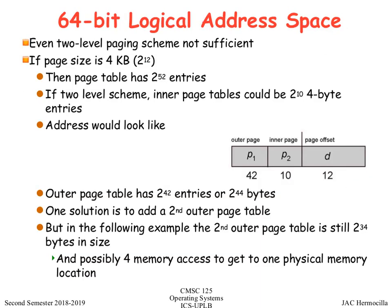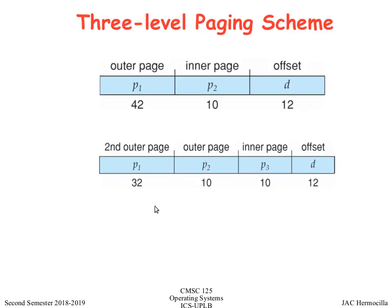For a 32-bit architecture, two levels of paging is okay. But for 64-bit, two levels are not enough, so it can be further divided into three levels. You have a three-level paging scheme where you have the inner page and the outer page, and the outer page is still further divided. This allows you to minimize the amount of memory needed to store the page table — that is the purpose of the hierarchical structure.